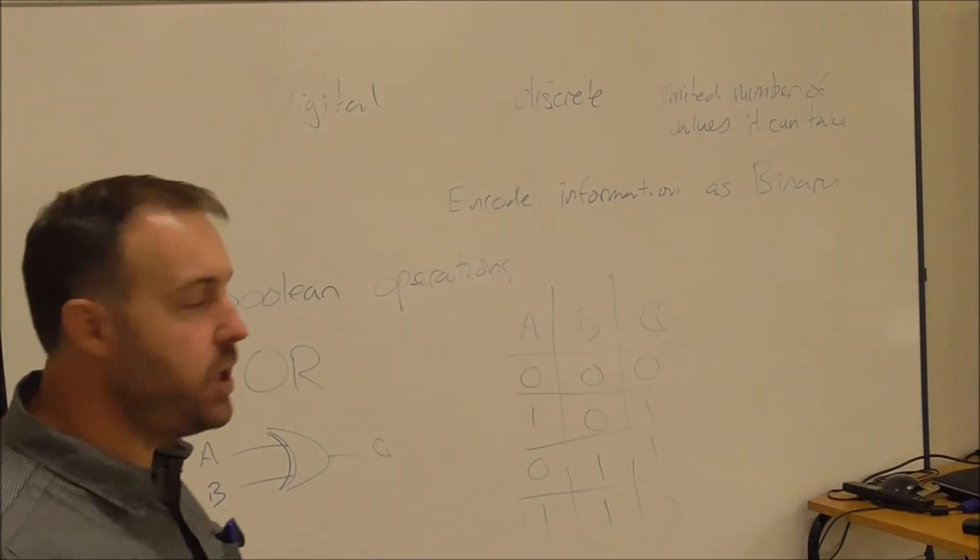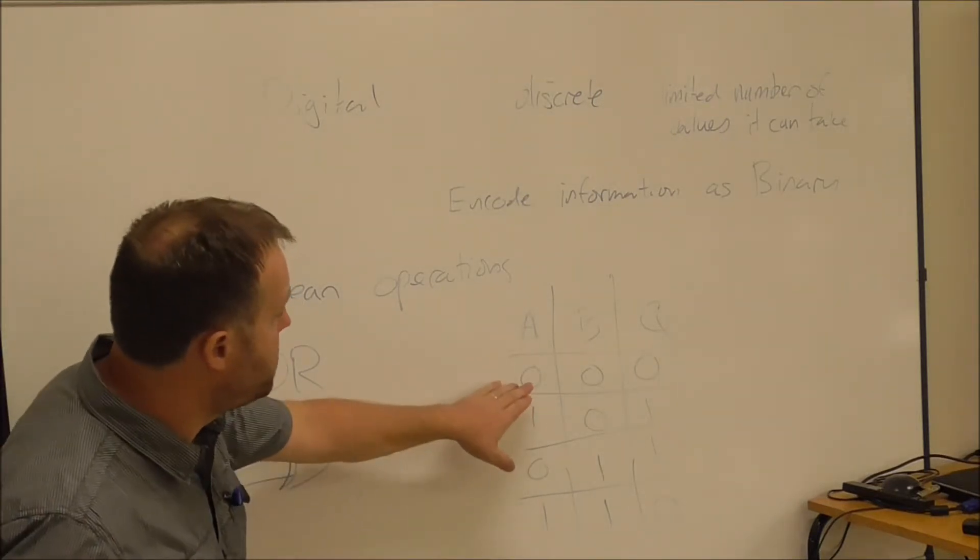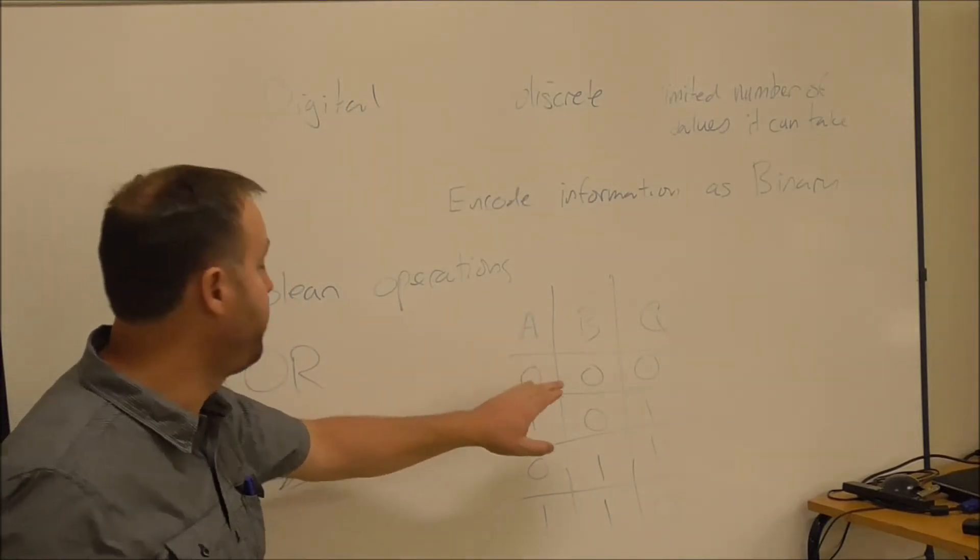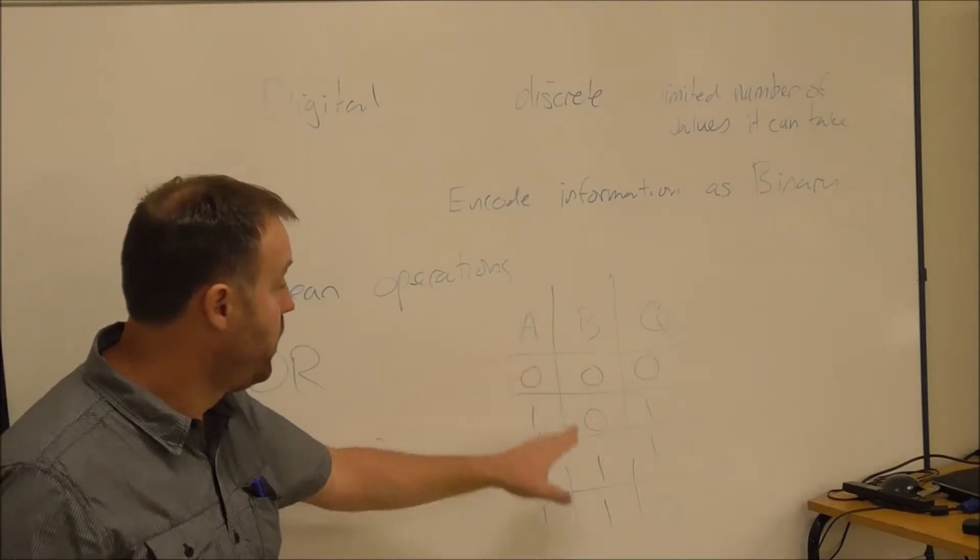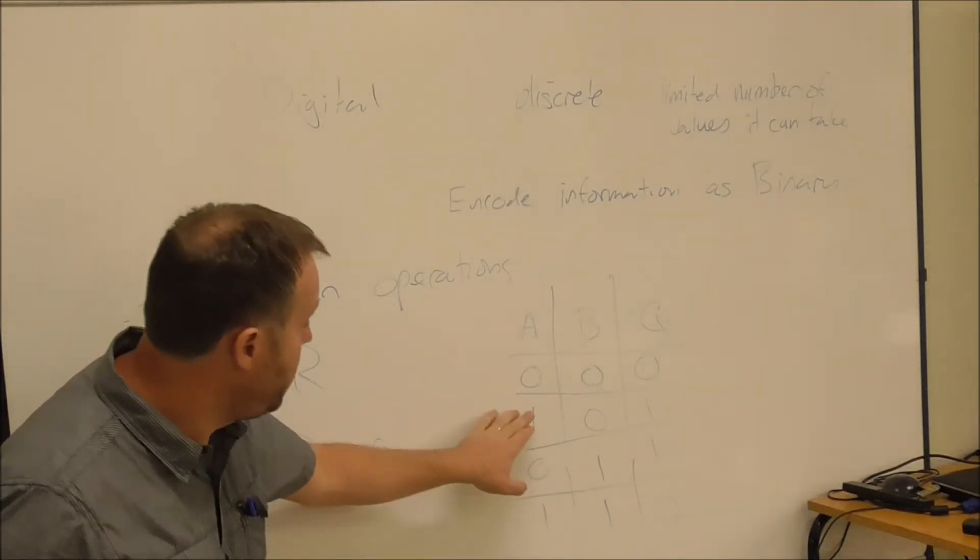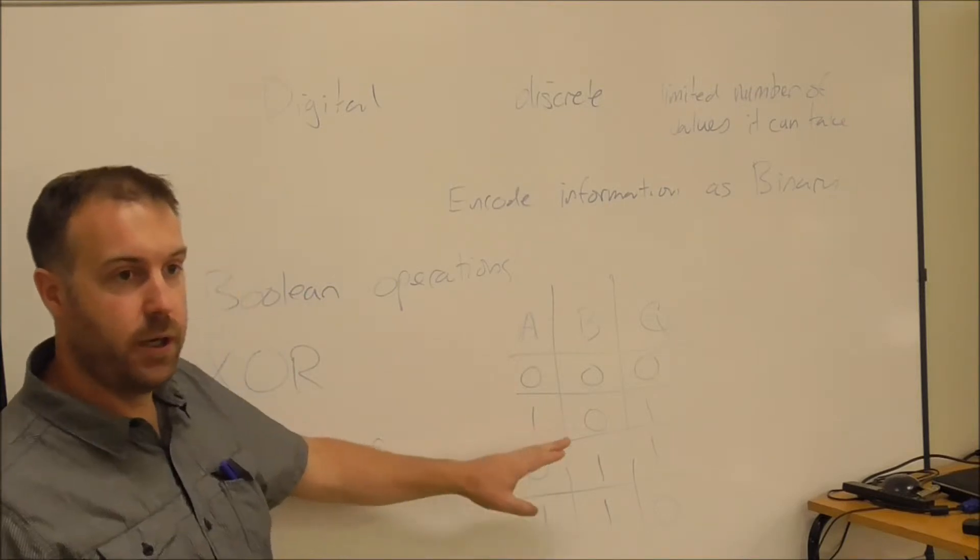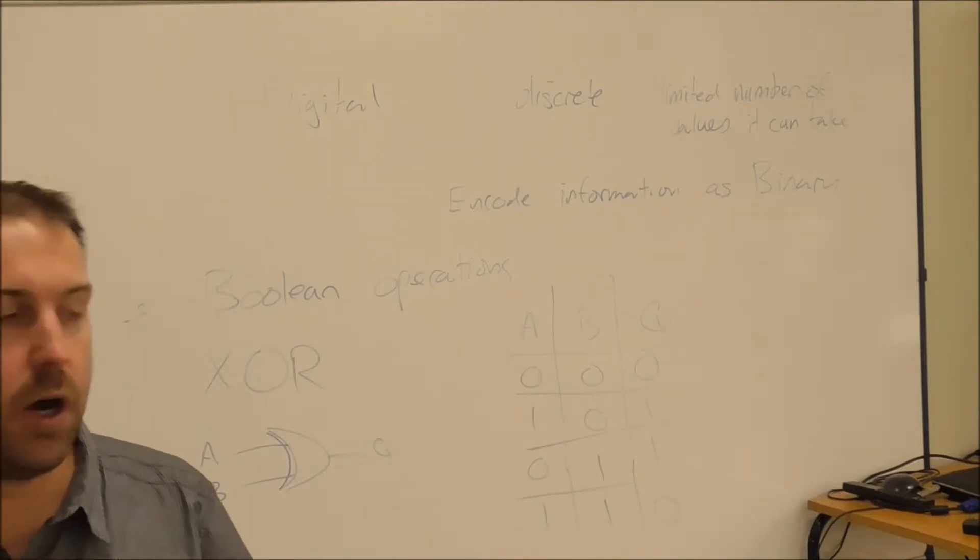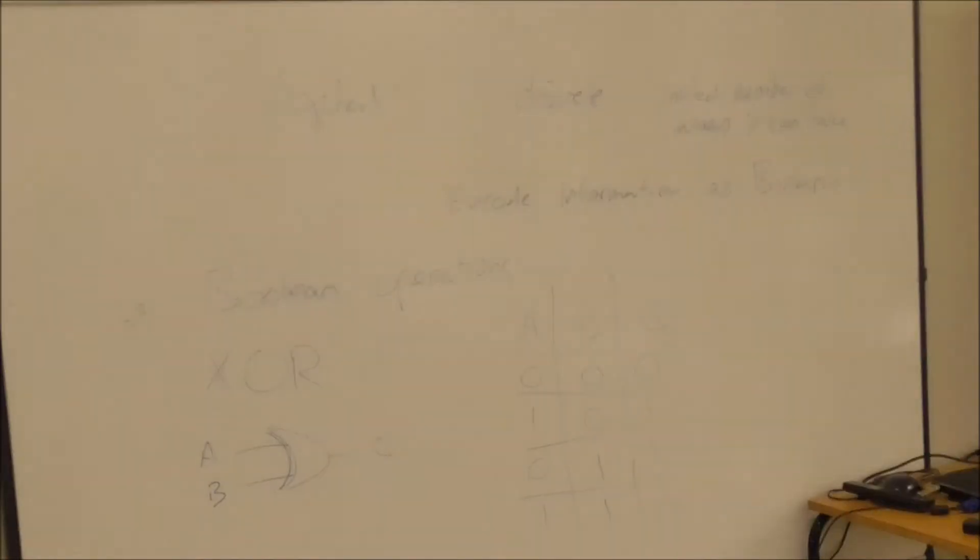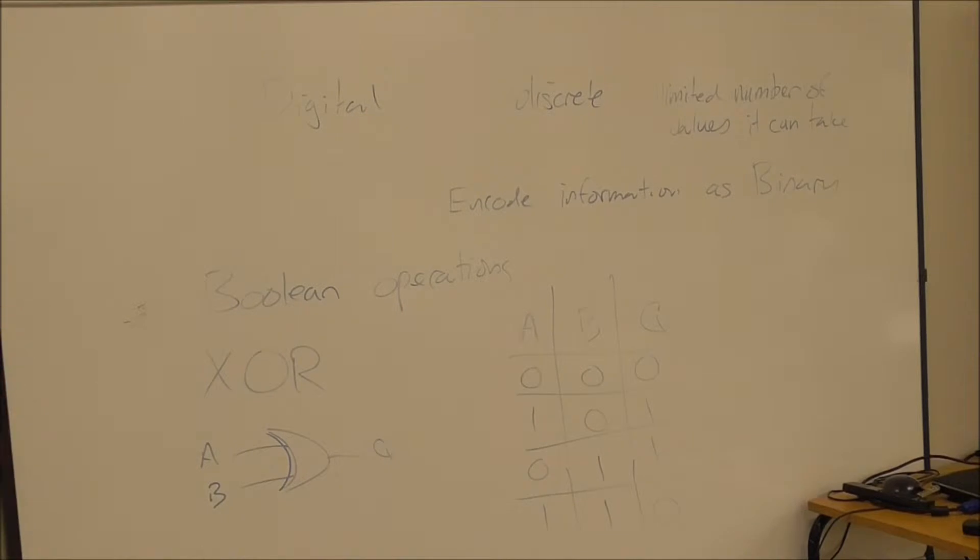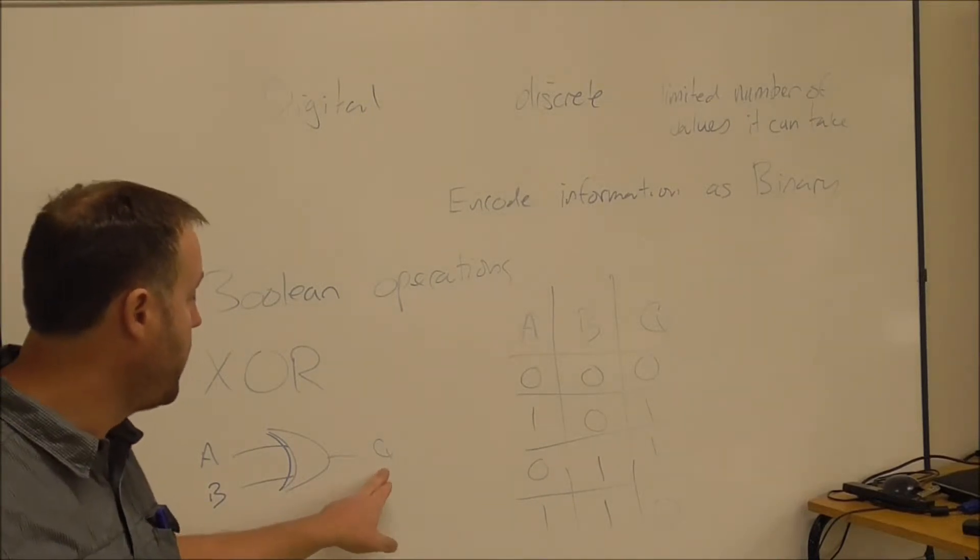Another way you can think about this is that if the inputs are the same, the output is low. If the inputs are different, the output is true. So if the inputs are different, if you've got one or the other but not both, then the output will be true or high.